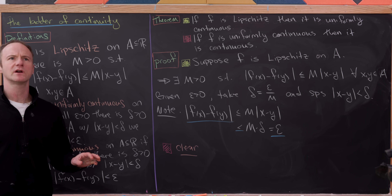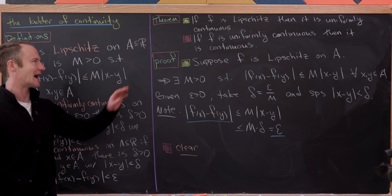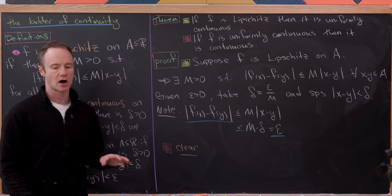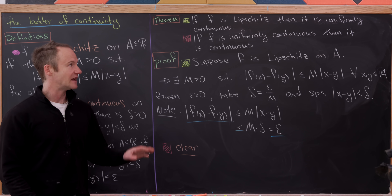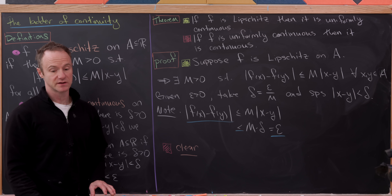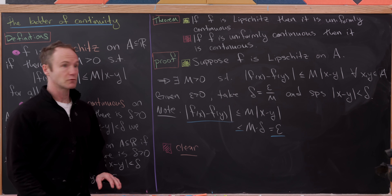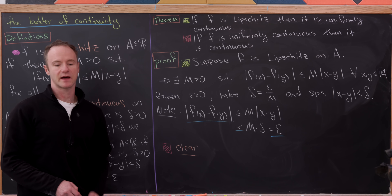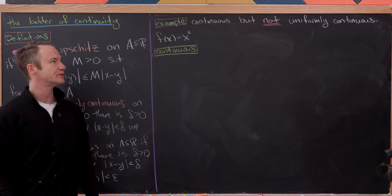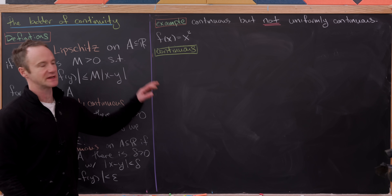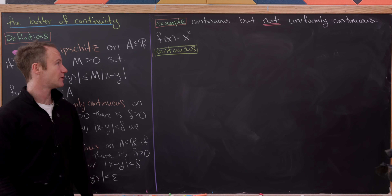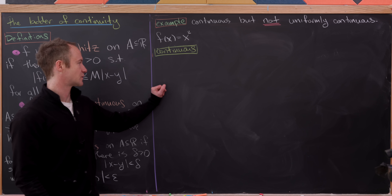One of the most natural questions after seeing this result is whether the converses are true. In fact, the converse of each of these statements is false. Let's see examples showing that. First, we'll find a function that's continuous but not uniformly continuous, and we're going to use the simple function f(x) = x².